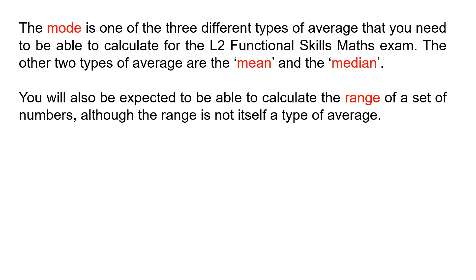Now, it's worth noting that the mode is one of three different types of average that you need to be able to calculate for the Level 2 Functional Skills Maths exam. The other two types of average are the mean and the median. You'll also be expected to be able to calculate the range of a set of numbers, although the range is not itself a type of average.